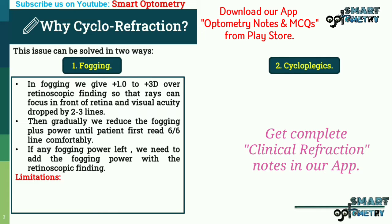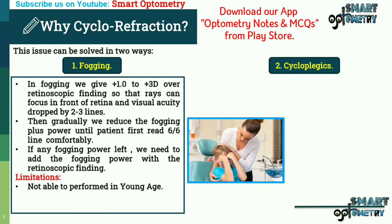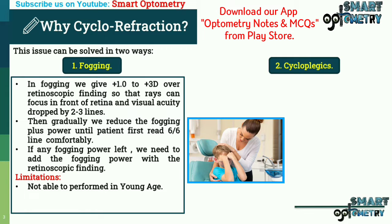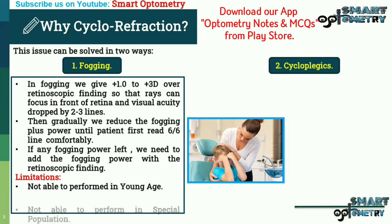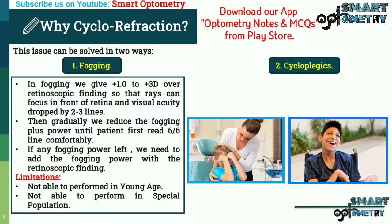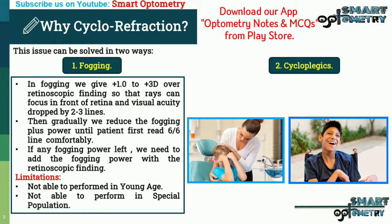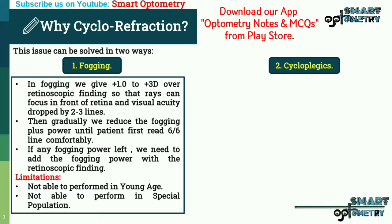The limitations of the fogging method are: it cannot be performed in young age because young children are not cooperative and are not able to identify the optotypes on the visual acuity chart. It also cannot be performed in special populations like cerebral palsy or patients who are not able to speak.